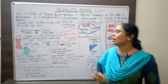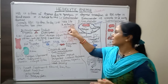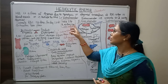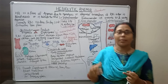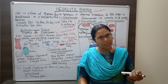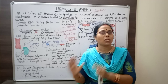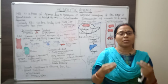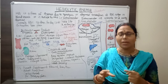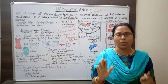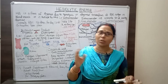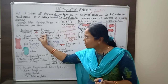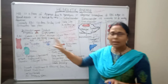Normally, RBCs have a lifespan of 120 days. In our body, about two million RBCs are formed per second through the process of erythropoiesis. At the same time, some destruction also occurs daily — about 1% of total RBC production is destroyed each day. When production and destruction are well balanced, the body remains healthy.